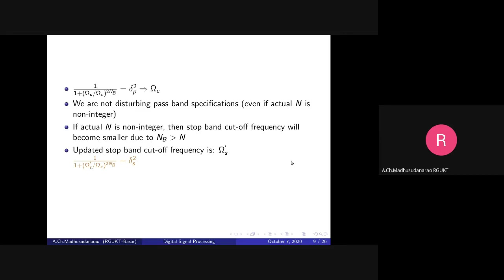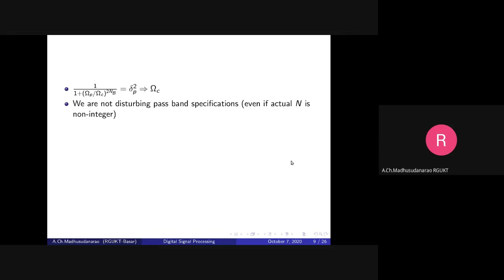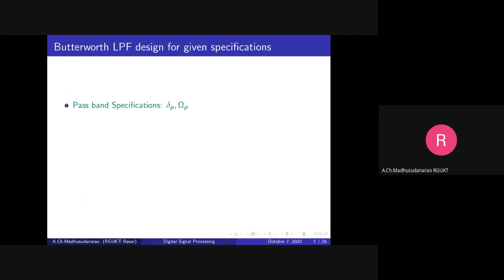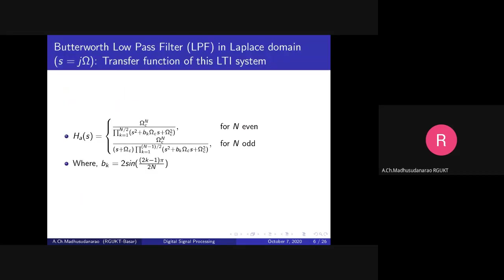Once you know Ωc and n, you simply have the transfer function. Substitute Ωc and the ceiling value of n into the Butterworth transfer function expression and you are done.